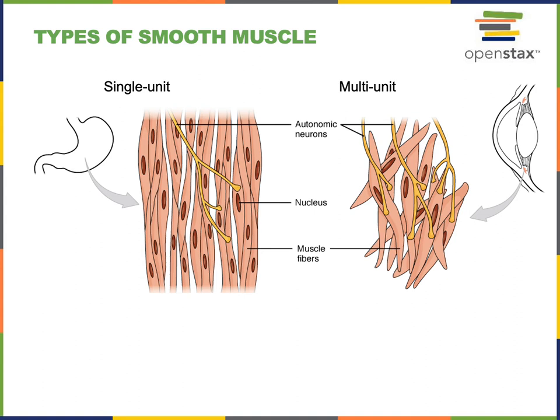There are two different types of smooth muscle tissues. In single unit smooth muscle, the autonomic neurons form synapses with only some of the smooth muscle fibers in the tissue. Smooth muscle fibers are connected in single unit smooth muscle tissue by gap junctions, which allow ions such as calcium to flow from the cytosol of one cell into the cytosol of an adjacent cell. This enables the entire tissue to contract as a single unit, hence the name.